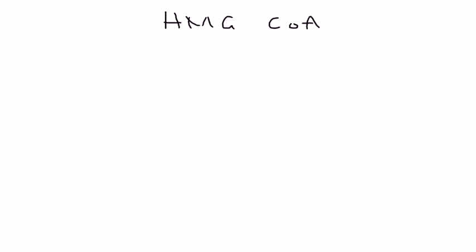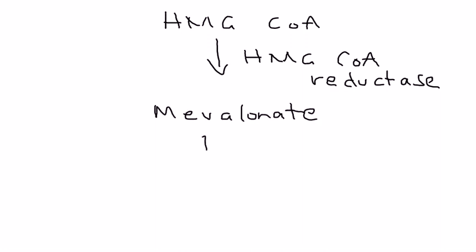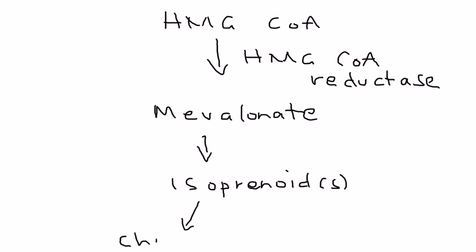Let's talk about the chemical pathway of cholesterol synthesis. You have HMG-CoA, which is then acted upon by an enzyme known as HMG-CoA reductase, and that brings about mevalonate. Further down the pathway, you have isoprenoids, and finally you have cholesterol being made by the body.